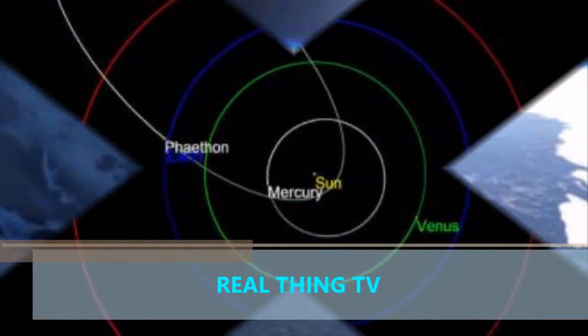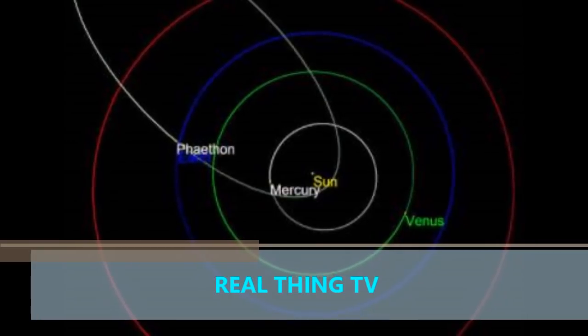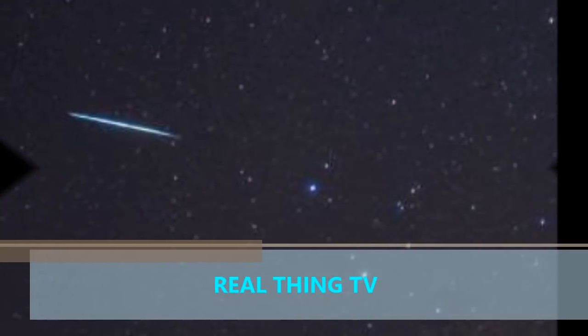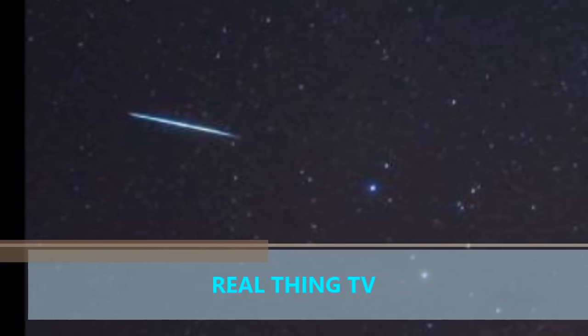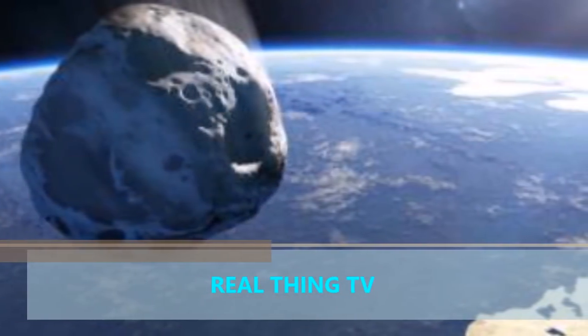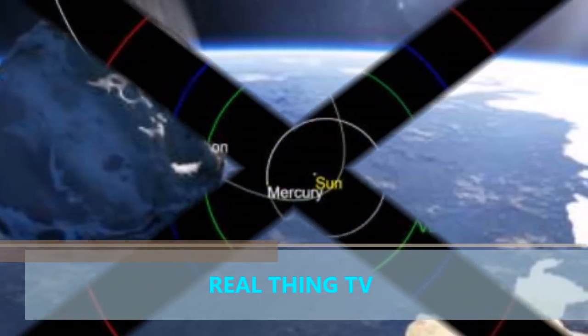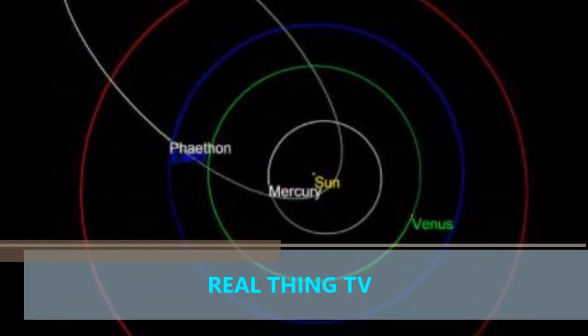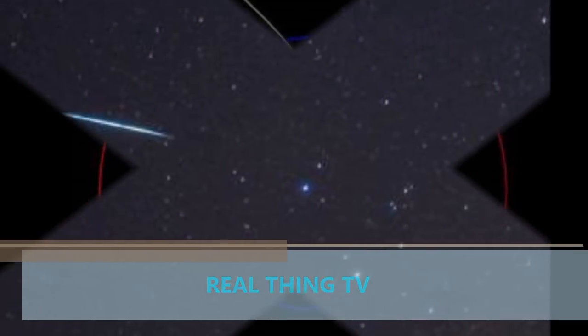Asteroid 3200 Phaethon will be at the closest point to Earth at 10 PM on Saturday. The three-mile chunk of rock will zoom past Earth at a distance of just 0.069 AU, one AU is the distance between the Earth and the Sun, or 6.4 million miles, and in astronomical terms is a hair's breadth.